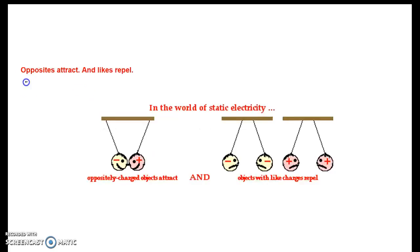First rule of charges is that opposites attract and likes repel. And if you can remember this rule, no matter what we show you, you can solve for anything with electrostatics. So in static electricity, opposites attract. Negatives and positives attract. Objects with like charges repel. Negative repels negative. Positive repels positive. Knowing that will help you solve a lot of problems with statics.